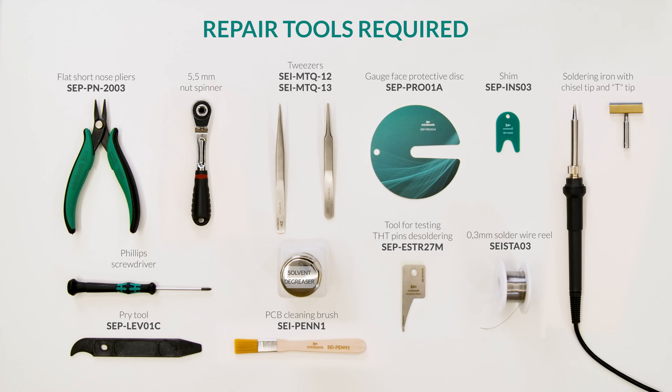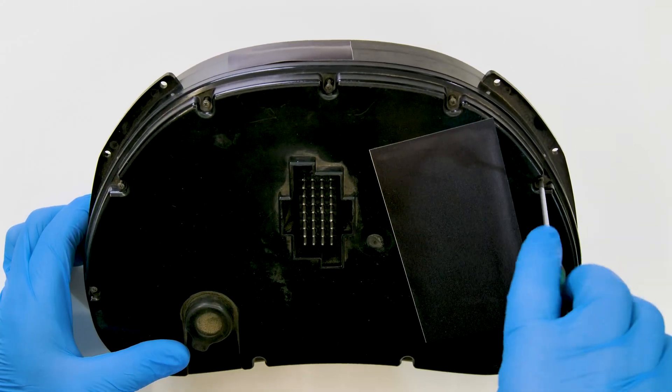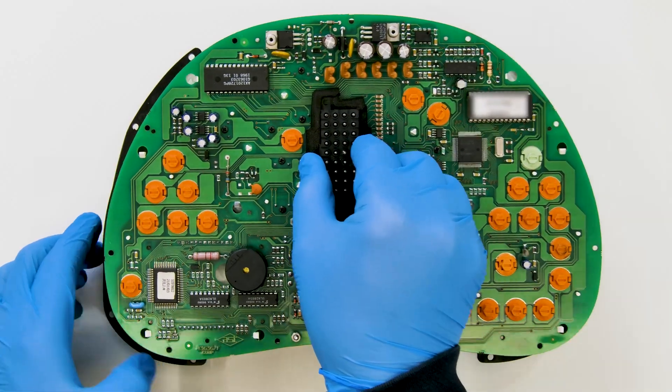For this repair, you will need the following tools. Position the dashboard as shown and undo the rear screws with the Phillips screwdriver. Remove the rear cover, then the front one.